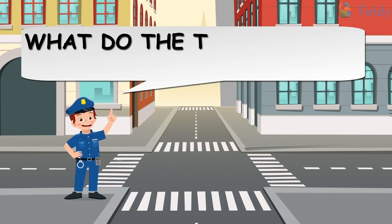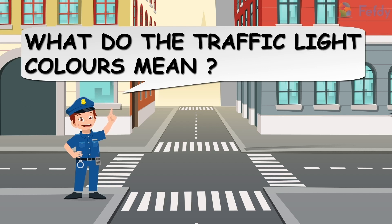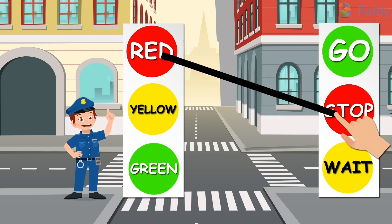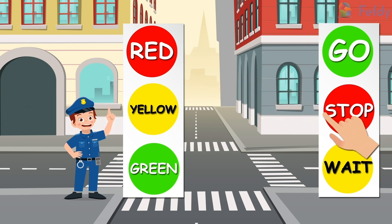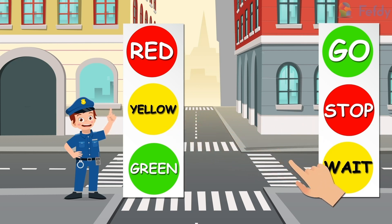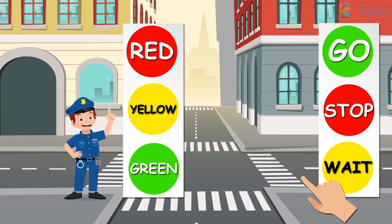What do the traffic light colors mean? Red means stop. Yellow means wait — wait for your turn.